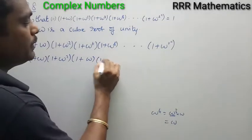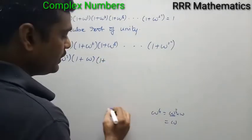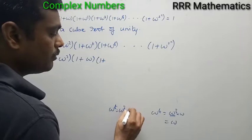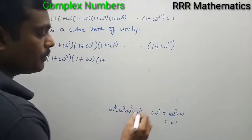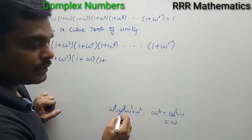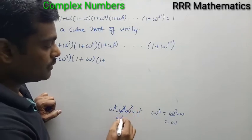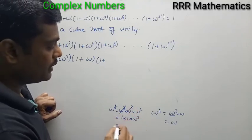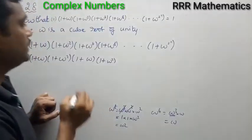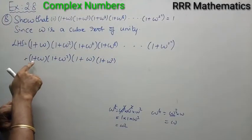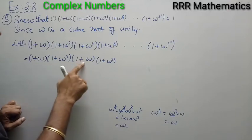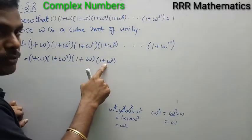And (1 + ω⁸): we write ω⁸ = ω³ · ω³ · ω², and since each ω³ = 1, this gives 1 · 1 · ω² = ω². So the fourth factor is (1 + ω²). Continuing this pattern, the factors alternate: (1 + ω), (1 + ω²), (1 + ω), (1 + ω²), and so on.